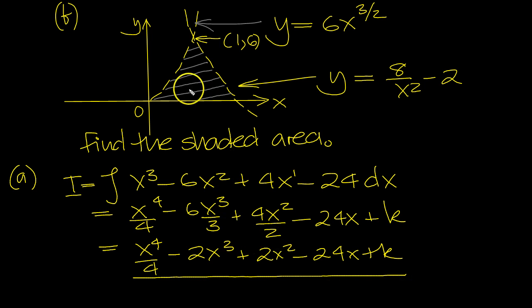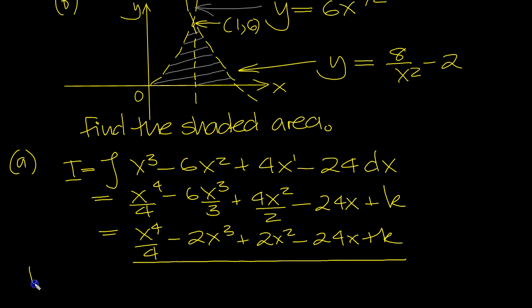Now part b, we need to work out this area here. This is the curve 6x to the 3 over 2, it meets here. So this area would be, you could divide it into 2 if you drop this vertical here. This is the value 1. When does this equal 0? So we need to find out that. Well, we can see that when x is 2, this will be 8 over 4, which will be 2, minus 2. So we can just see it by inspection. So that value is 2.